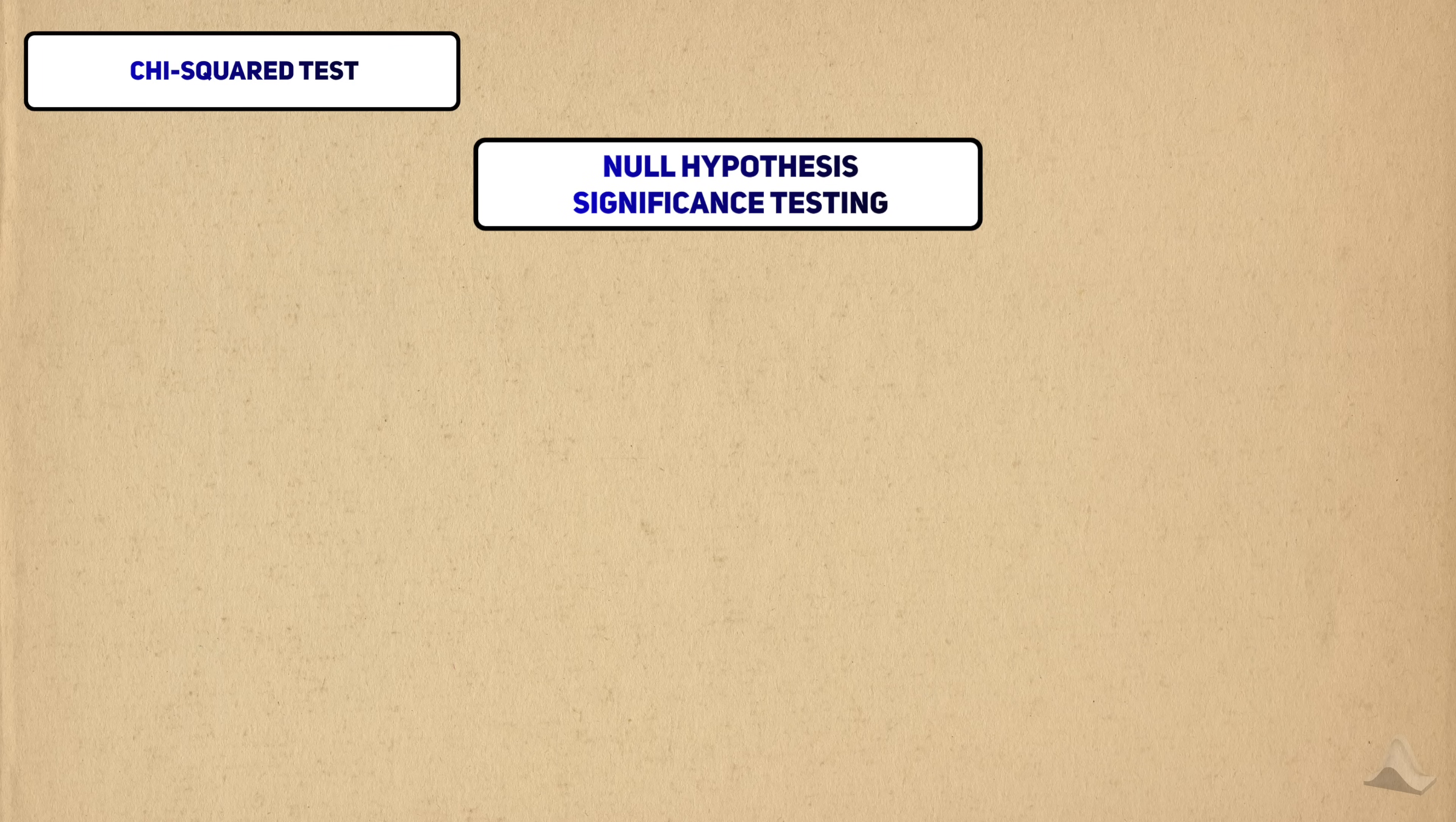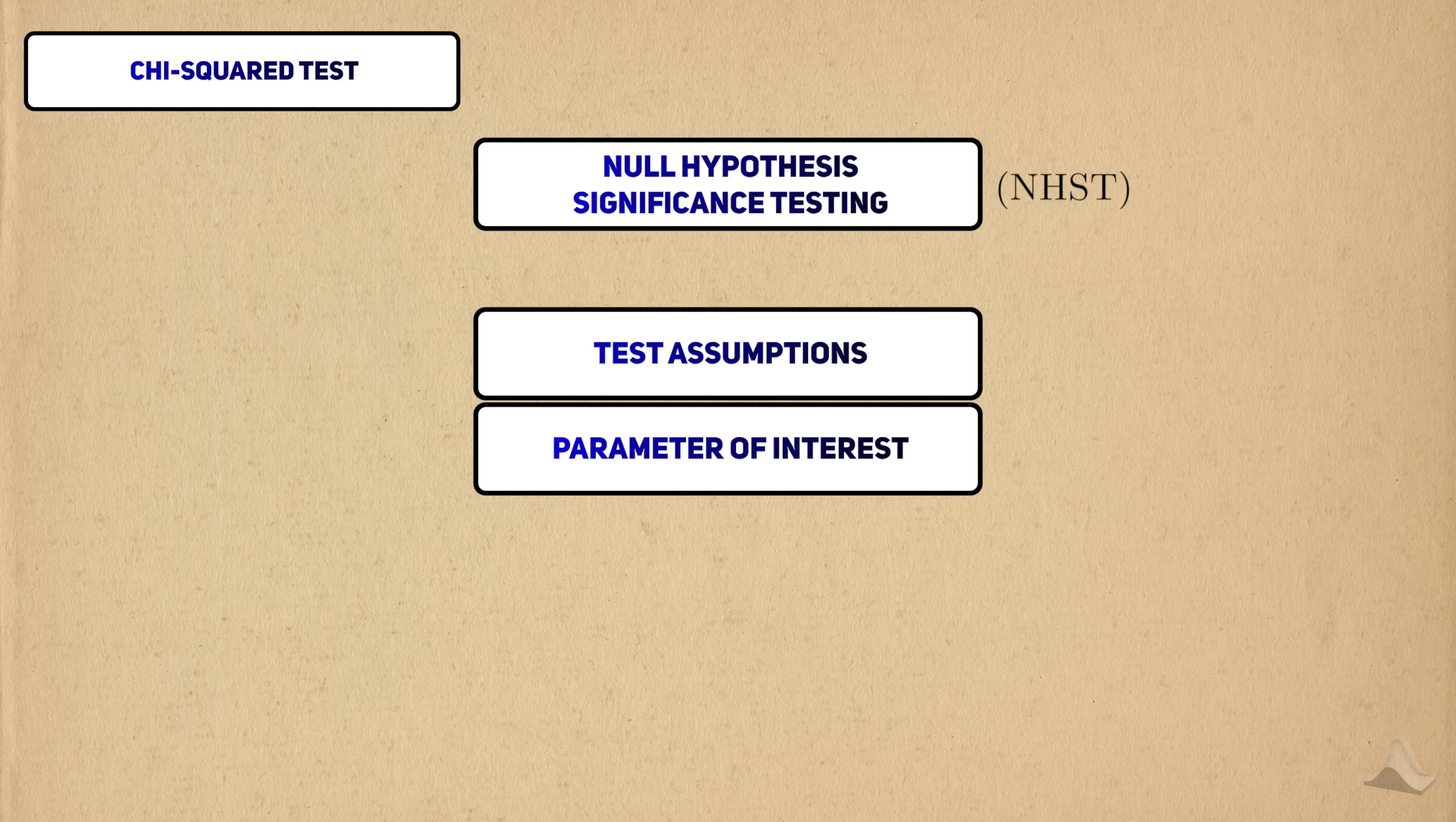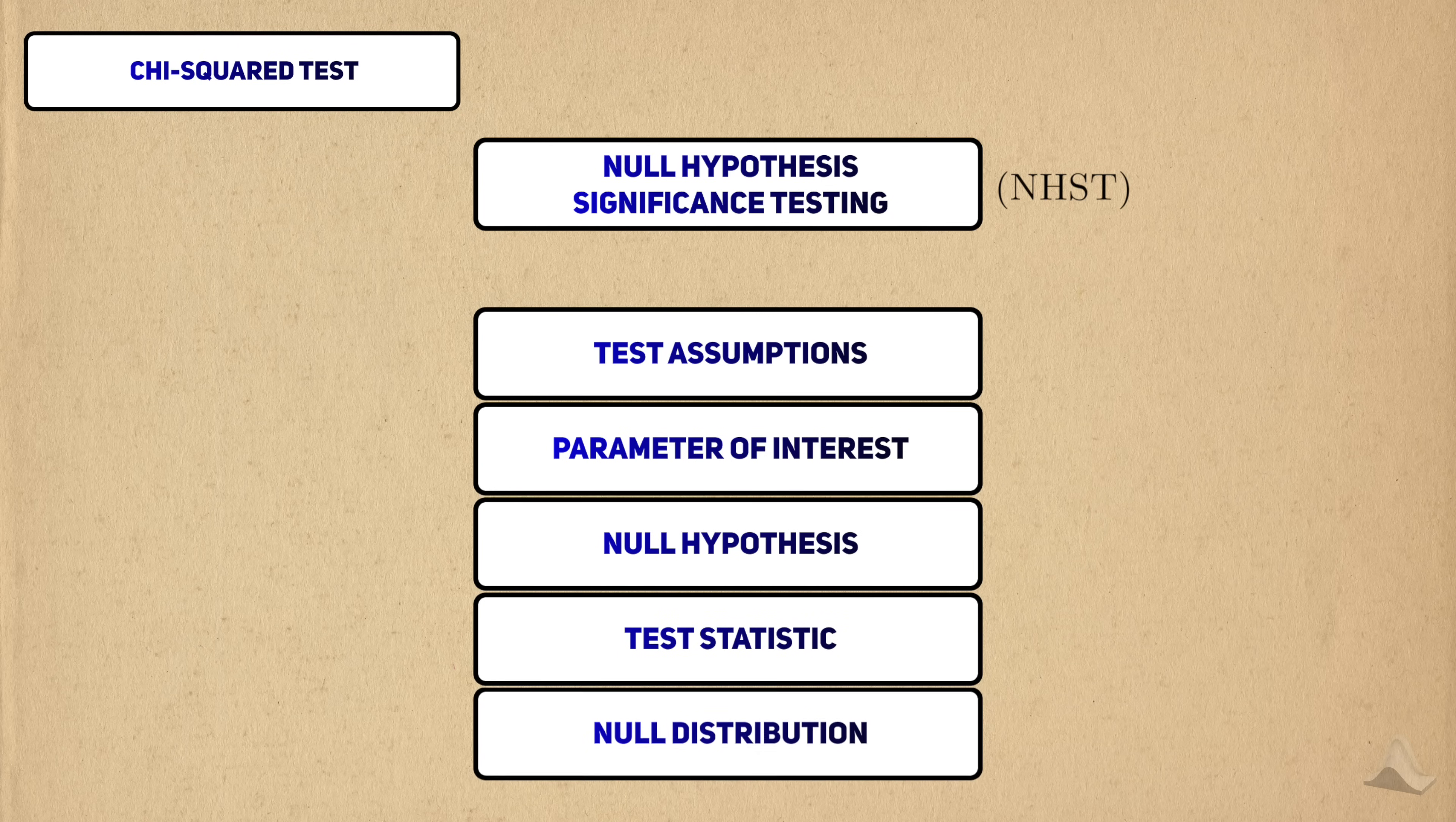Like all the hypothesis tests we've covered so far, we'll break it down in terms of the Null Hypothesis Significance Testing Framework, or NHST. We'll look at the assumptions of the test, the parameters of interest, the null hypothesis, the test statistic, and the distribution for the statistic under the null hypothesis.